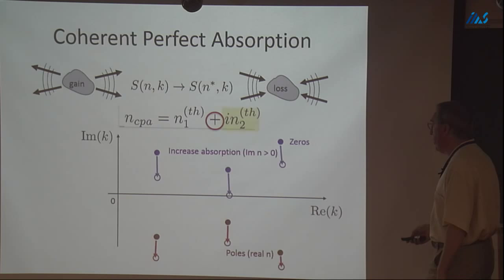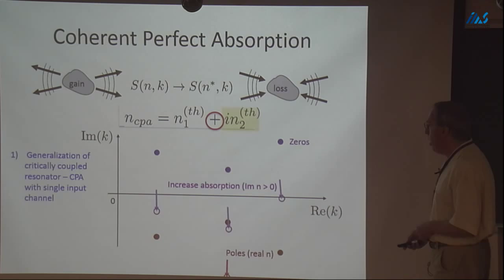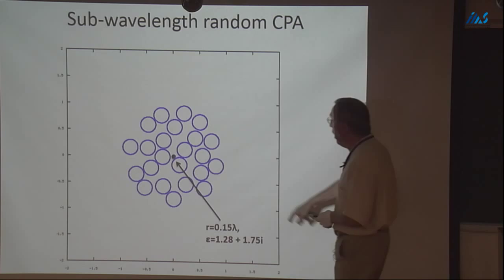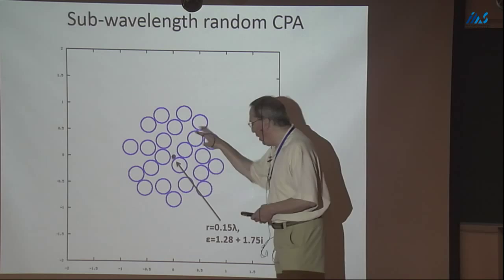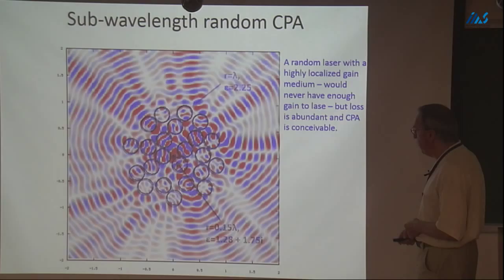This also shows you can impedance-match to some tiny but strong absorber shielded by scattering lossless disks. If we think of this as the time-reverse of a random laser, we can find an input wave that will be perfectly absorbed in that shielded region.